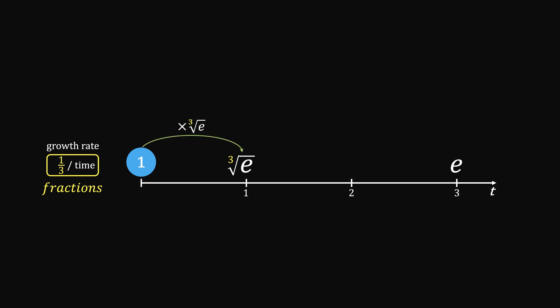The third root means if you multiply it 3 times, you will get e. It can be represented by e to the power of a third.